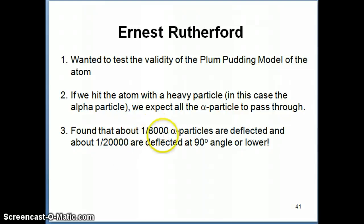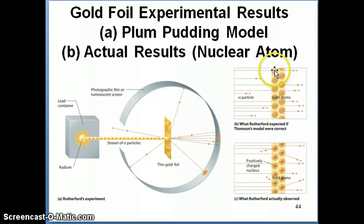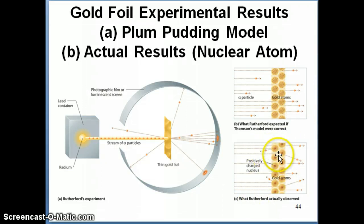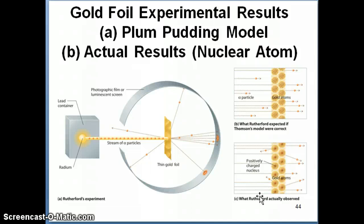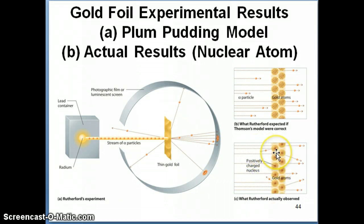Most of the alpha particles pass through the atoms without any issue. The top model shows what you'd expect the plum pudding model to produce — alpha particles all going through — and the bottom part is what he actually observed. So he concluded that there must be a small part of the atom, shown here by the darker color, that consists of positively charged particles. Because the electrons have to be balanced by an equal number of positively charged particles, he concluded that the positively charged particles must be arranged in a small space within the atom — later called the nucleus — causing the alpha particle to deflect back.